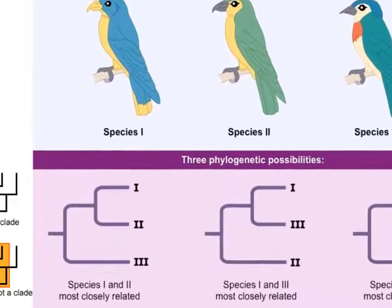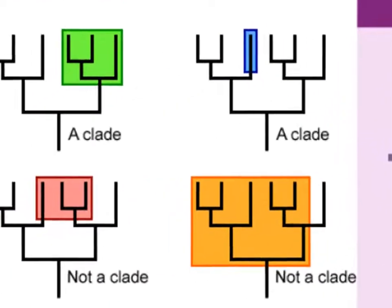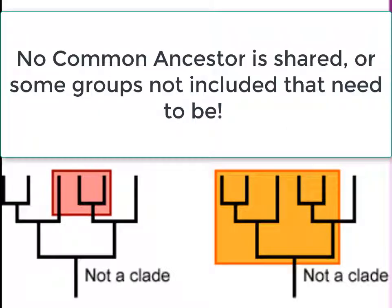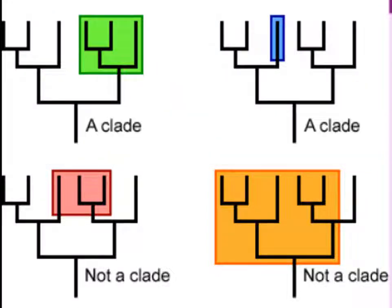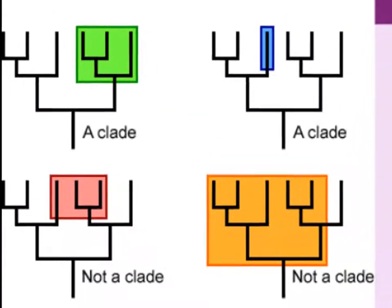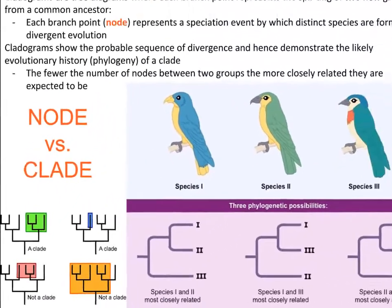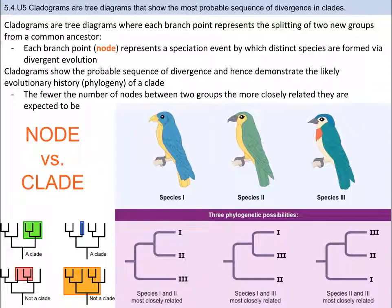Let's examine the image on the bottom left so you can see the terminology in action. The point where each of the branches come together is the node. All of the organisms that share a common ancestor is a clade. You can see examples of clades and non-clades — non-clades do not share a common ancestor. The fewer number of nodes between two groups, the more closely related the groups are. The point of cladograms is to show the probable sequence of divergence and demonstrate the likely evolutionary history of a group of related organisms from a common ancestor.